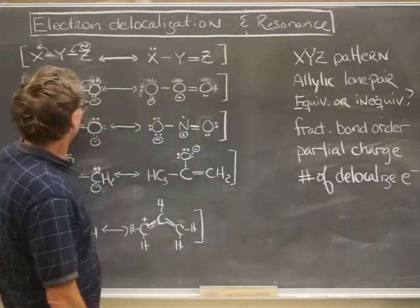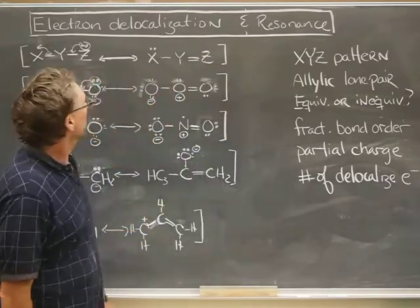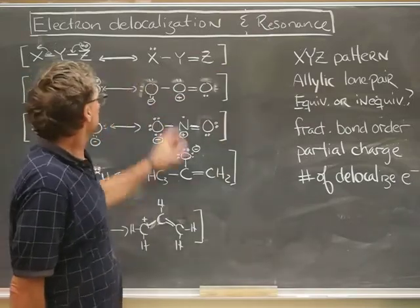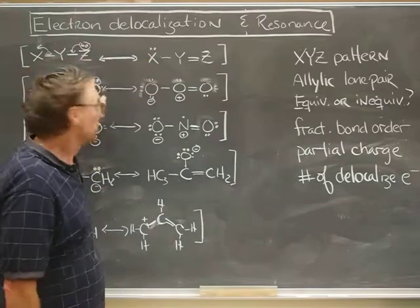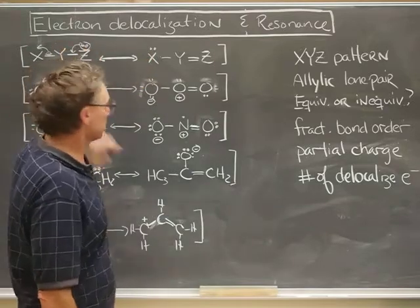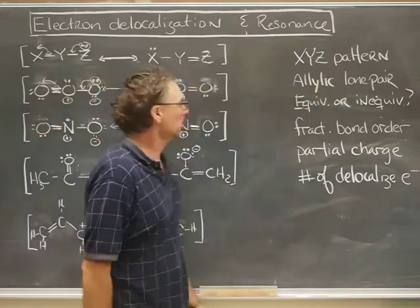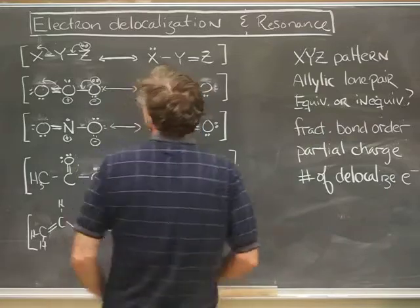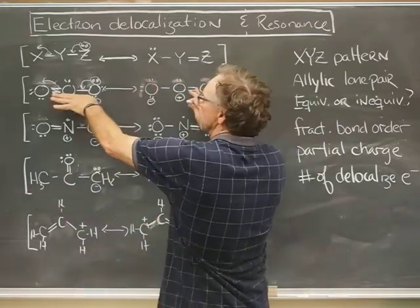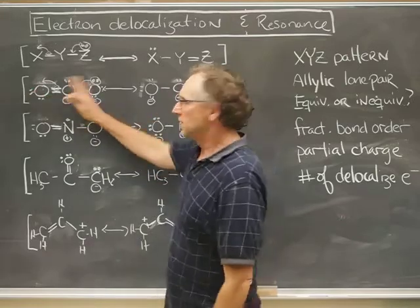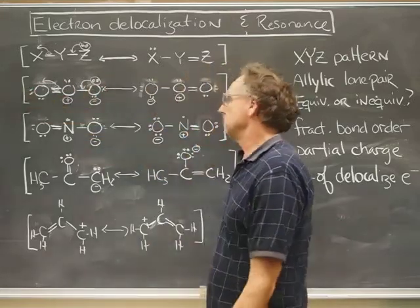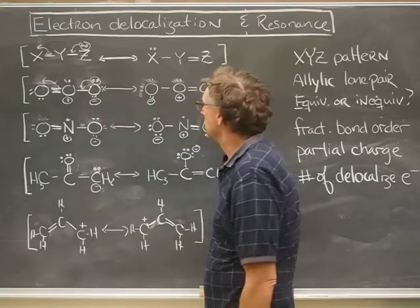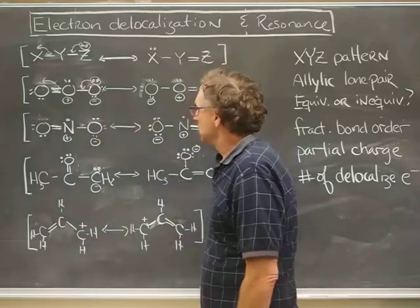Now a little bit about the nomenclature here. What we've drawn here are different resonance forms, and the pair of electrons that came down off Z to form the double bond is called the allylic lone pair of electrons. I have this phrase equivalent or inequivalent. What we have to decide here is do I have any reason to prefer this resonance form over that one, and the answer here is no. These oxygens are all identical to each other, so I would say these are equivalent resonance forms.